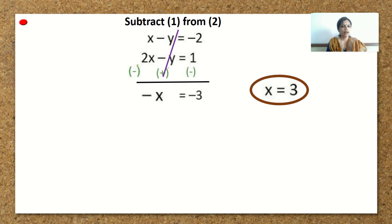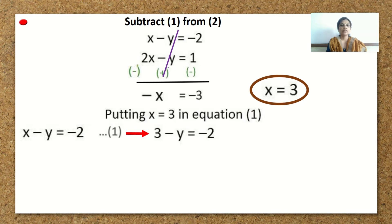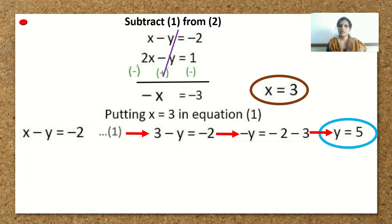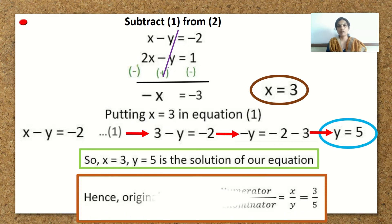Now let us find the value of y. We put x equal to 3 in equation 1. We get 3 minus y is equal to minus 2, so minus y is equal to minus 2 minus 3. Therefore, we get the value of y as 5. The original fraction is x upon y, and that is 3 upon 4. Once you start solving, you will quickly go ahead and finish the sum.